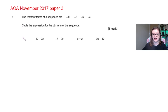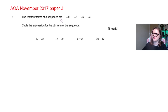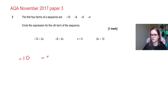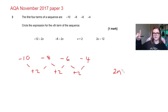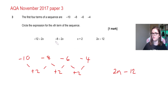Next: AQA November 2017, Paper 3 — multiple choice. The first four terms are −10, −8, −6, −4. Circle the nth term expression. Between each term I'm adding 2, getting less negative each time. So 2n. Then to get from 2 to −10: subtract 2 to get to 0, then another 10 — take away 12. So the answer is 2n − 12.